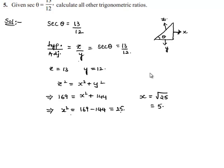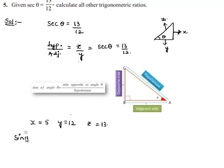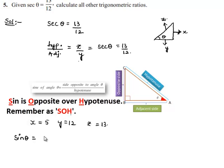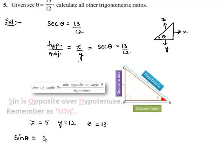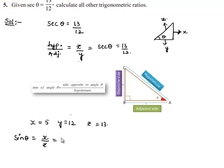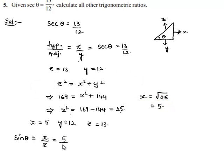So we have the values: x equals 5, y equals 12, and z equals 13. Let us find all other trigonometric ratios. First, sin theta, which equals opposite side by hypotenuse — the opposite side is x and the hypotenuse is z — which equals 5 by 13.